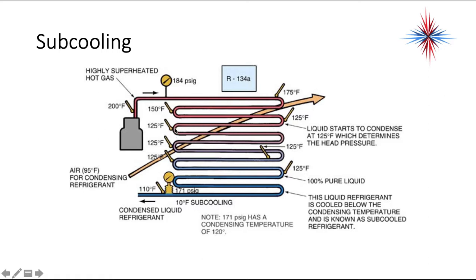The refrigerant continues to lose sensible heat until it evens out. At 125 degrees, the liquid starts to condense — a bunch of 125s in the diagram indicate the condensing point, which determines the head pressure. In the middle passes of the condenser, only latent heat is being removed; sensible temperature stays at 125 degrees. Once condensing is complete, we now have 100% pure liquid, still at 125 degrees.